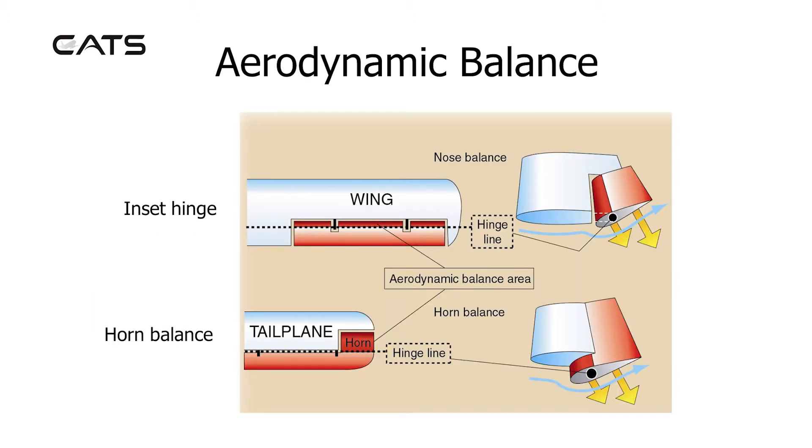Inset hinge-nose balance. The surface in front of the hinge line produces a force acting opposite to the control force, thereby reducing the moment. Control effectiveness is still maintained.